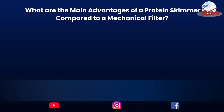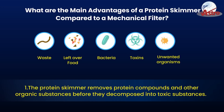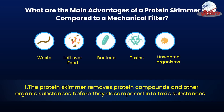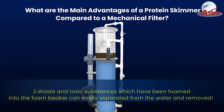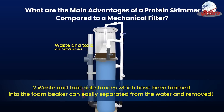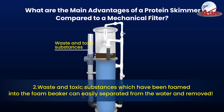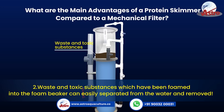What are the main advantages of a protein skimmer compared to a mechanical filter? One, the protein skimmer removes protein compounds and other organic substances before they decompose into toxic substances. Two, waste and toxic substances which have been formed into the foam can easily be separated from the water and removed.